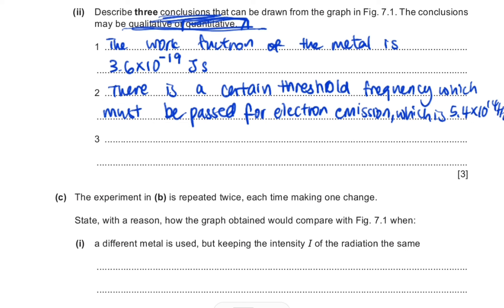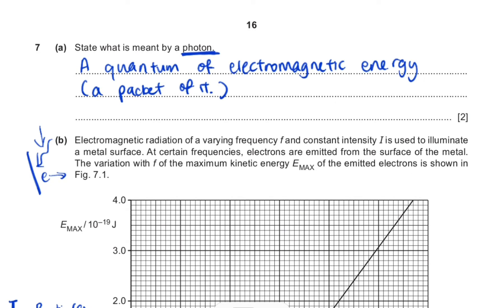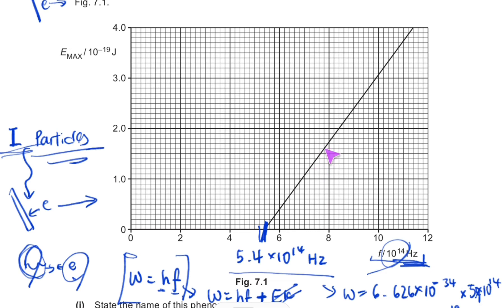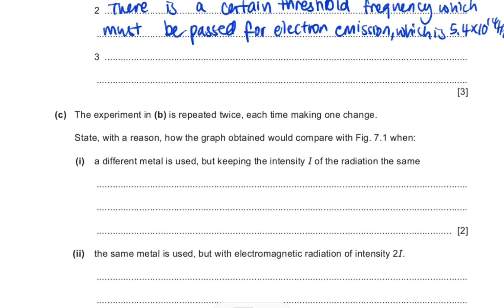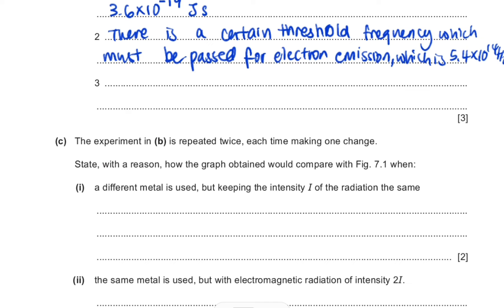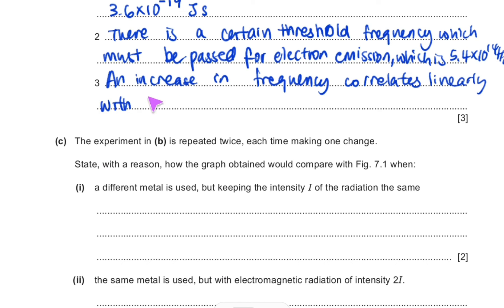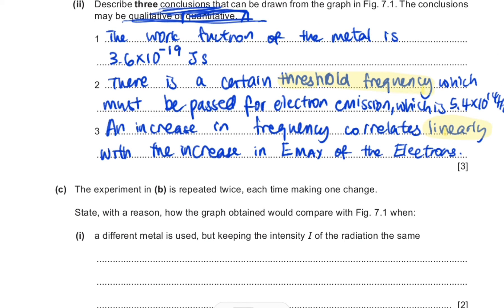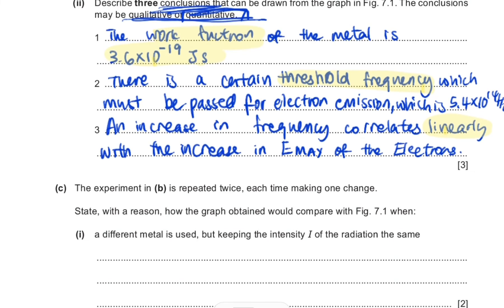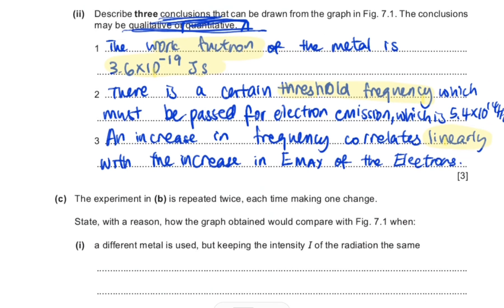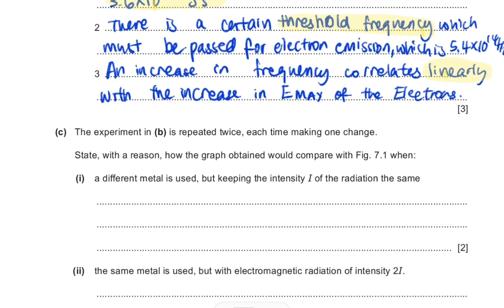The third conclusion is that the kinetic energy E_max of the emitted electrons increases linearly with frequency — 'linearly' is a key word here. The threshold frequency and work function are the other important keywords. You could also mention that the gradient of the line equals Planck's constant, but the three points of work function, threshold frequency, and linear increase in E_max are the most straightforward to derive from the graph.